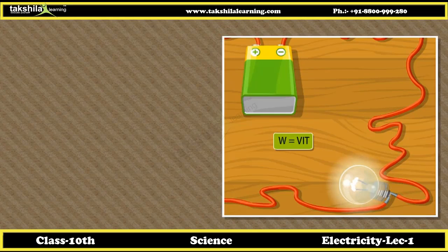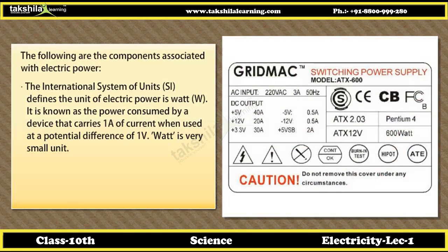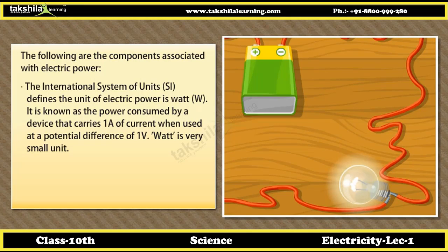Electric power. Electric power is the rate at which electric charge is transferred by an electric circuit. The International System of Units, SI, defines the unit of electric power as the Watt, W. It is the power consumed by a device that carries 1A of current when used at a potential difference of 1V.